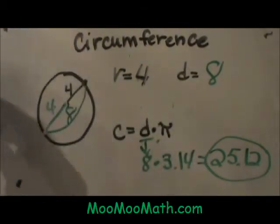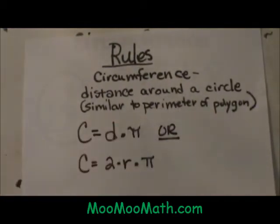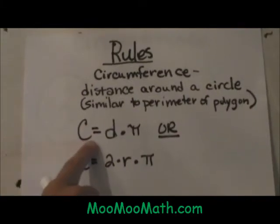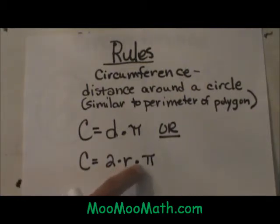The circumference is the distance around a circle. It is similar to the perimeter of a polygon. The two formulas you can use are C = d·π, which is the one I just used, or you can use C = 2·r·π.